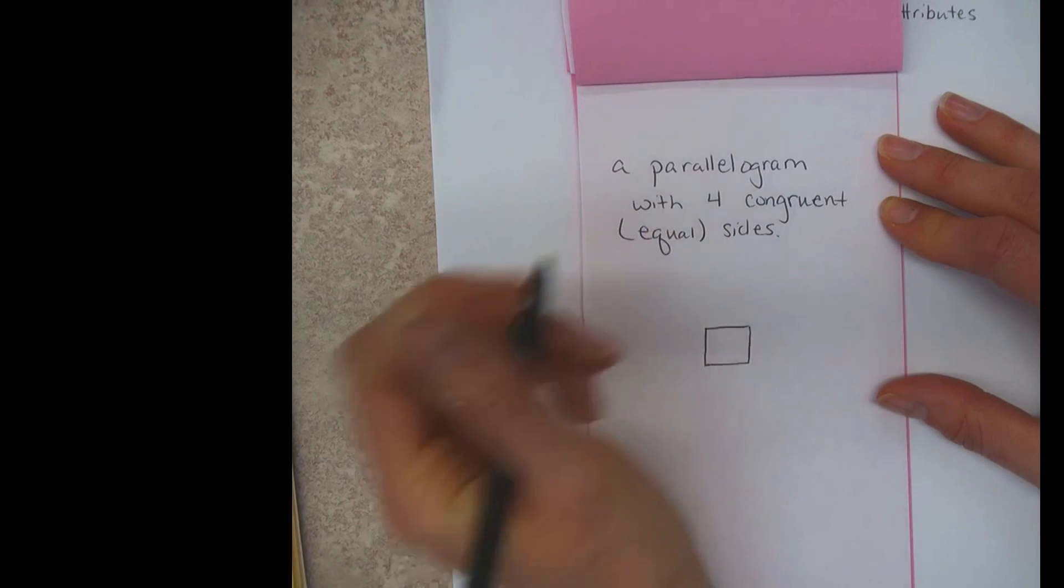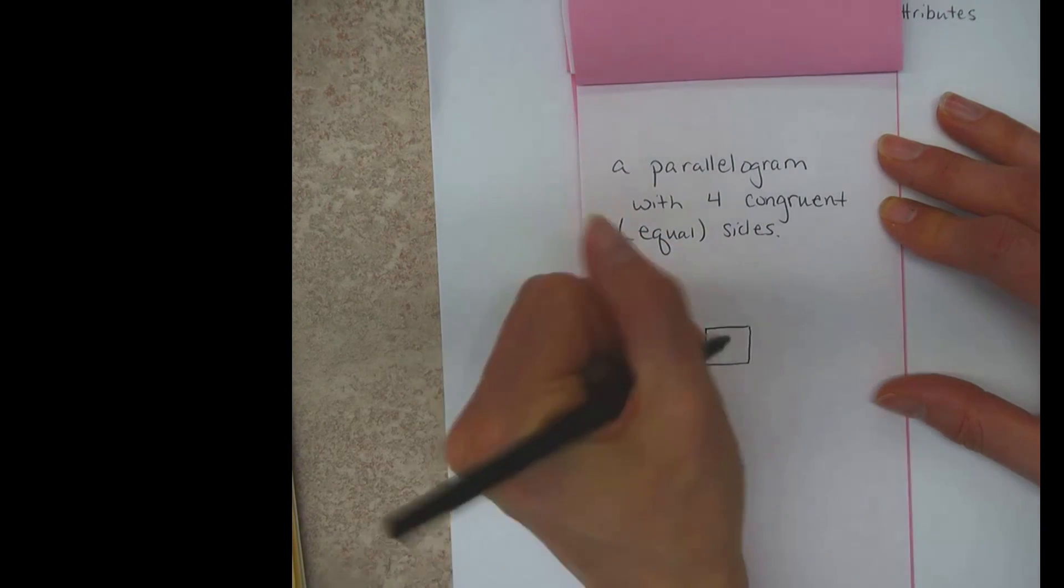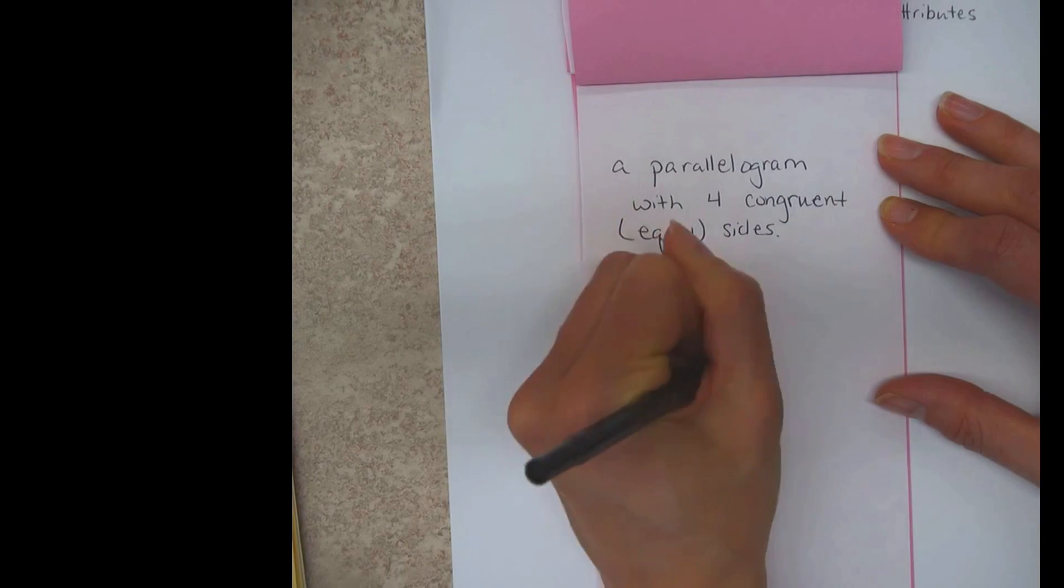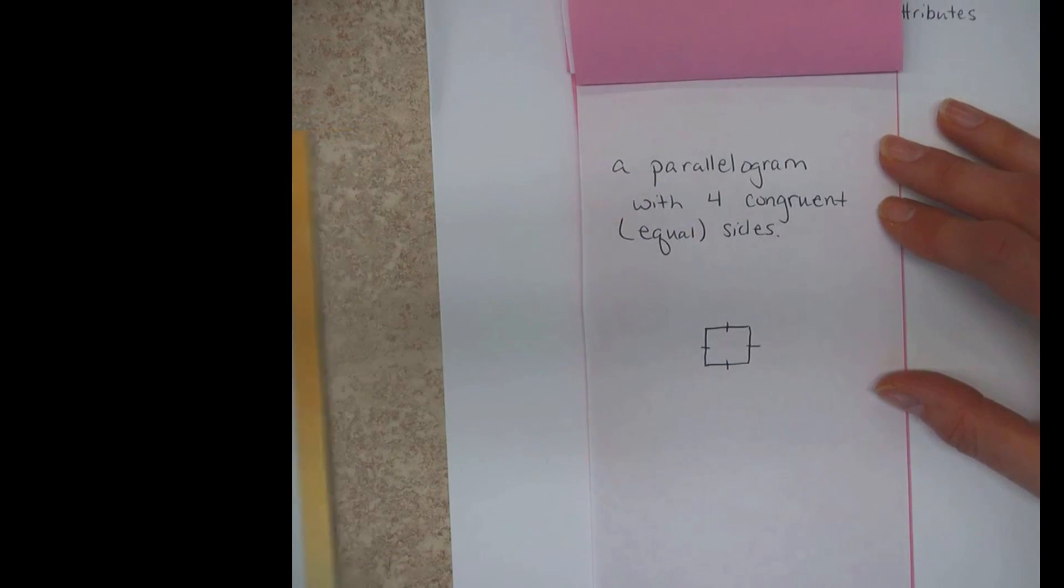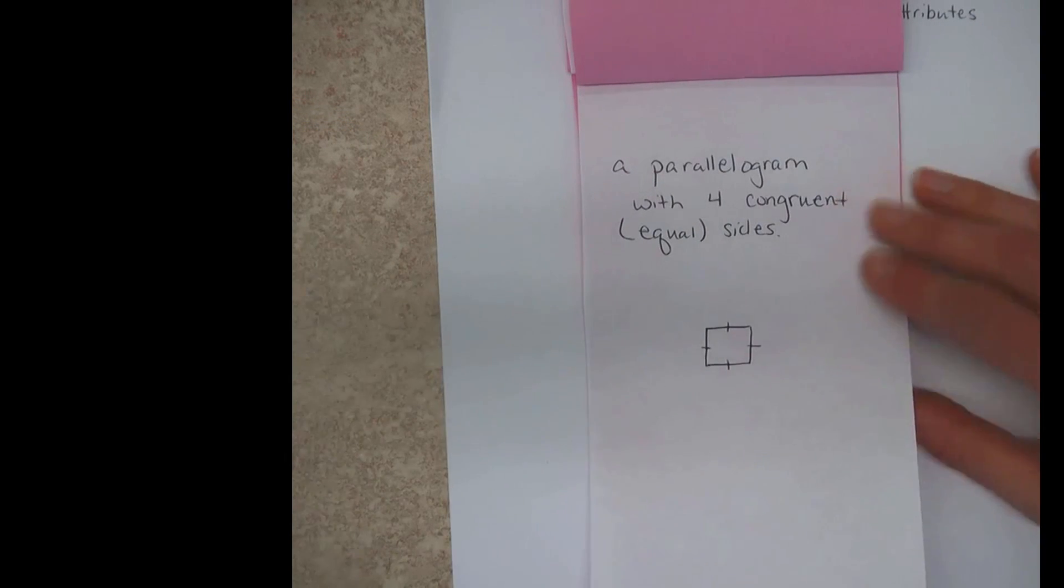It's sort of hard to draw to be super accurate, but I hope you get the idea here. These are all congruent, equal. And then a square.